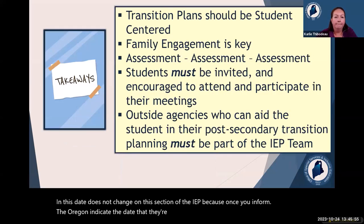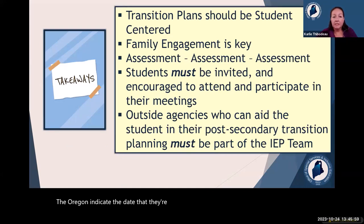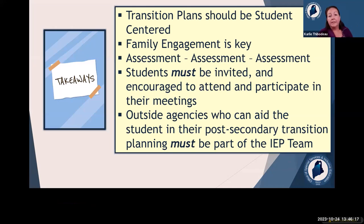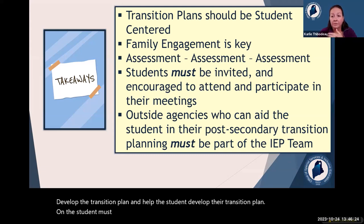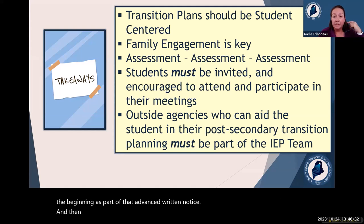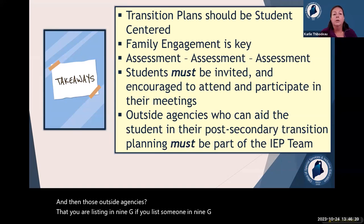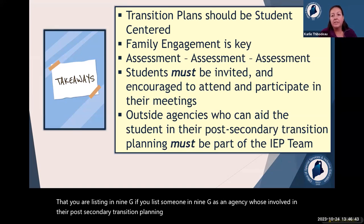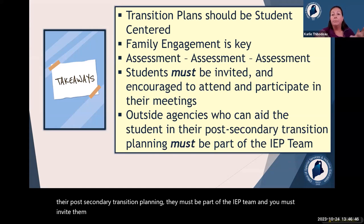Some takeaways: transition plans really should be student-centered. Getting the family involved is very important. Use those assessments and the data from them to really help the student develop their transition plan. The student must be invited — that's one of the things we look for in the advance written notice. And those outside agencies listed in 9G — if you list someone there, they must be part of the IEP team, you must invite them, and you must obtain that parental consent.